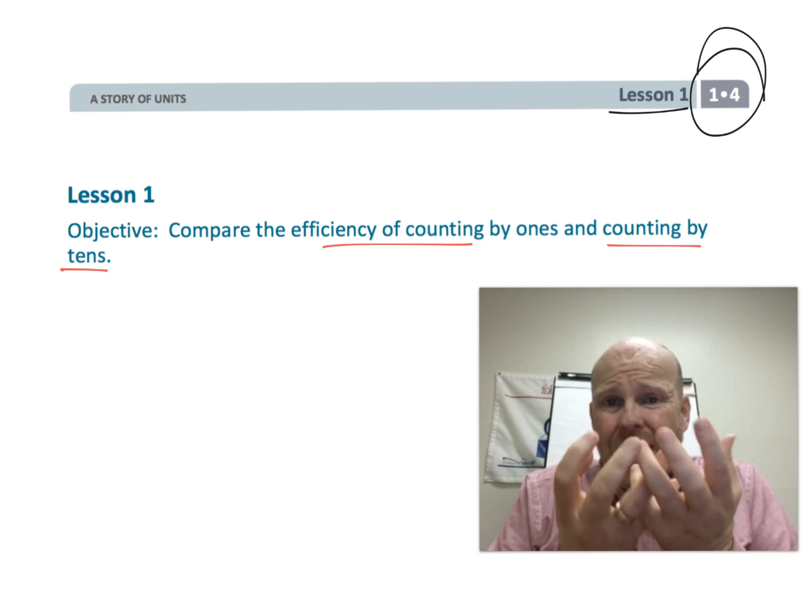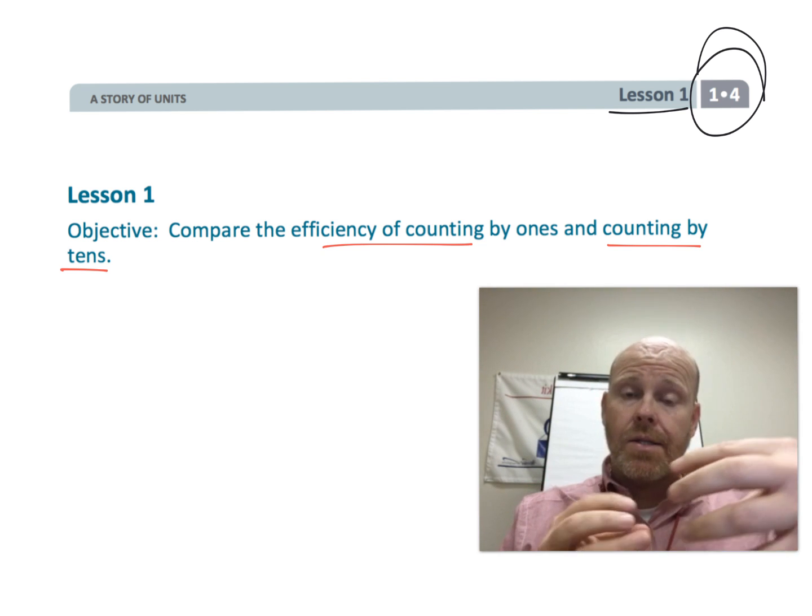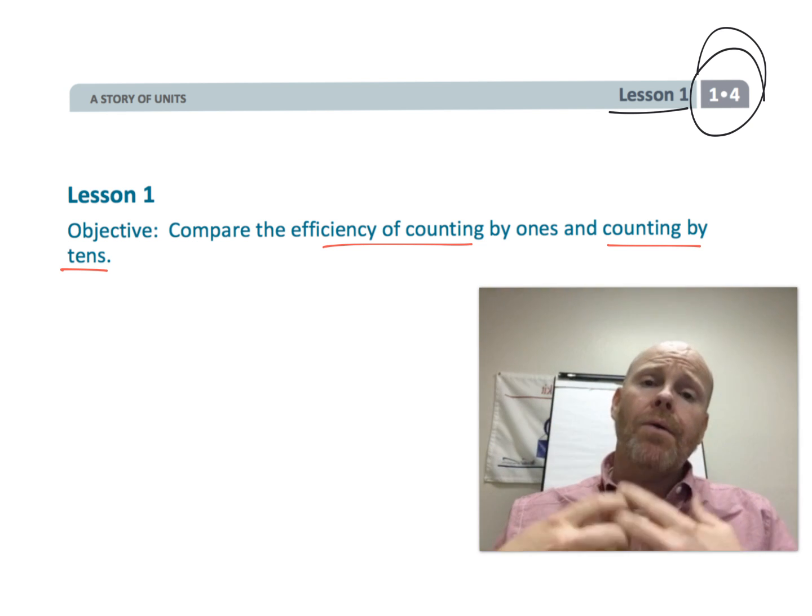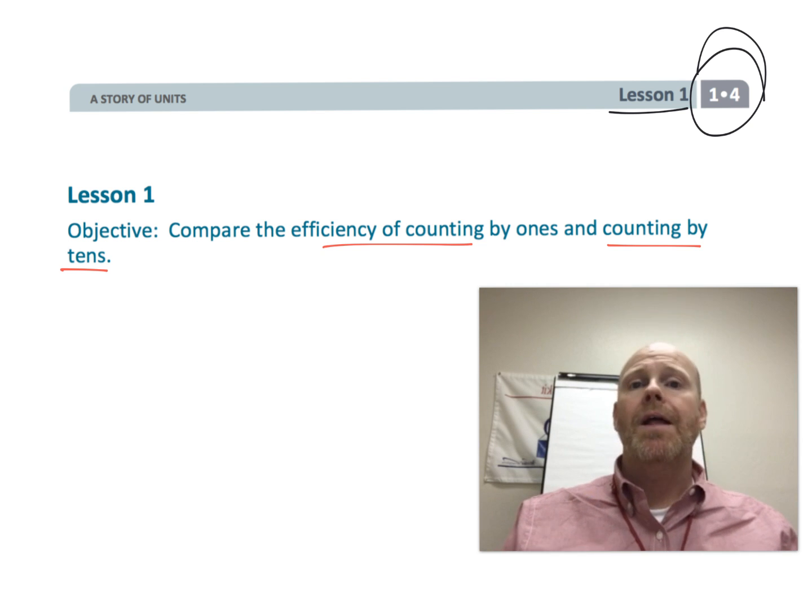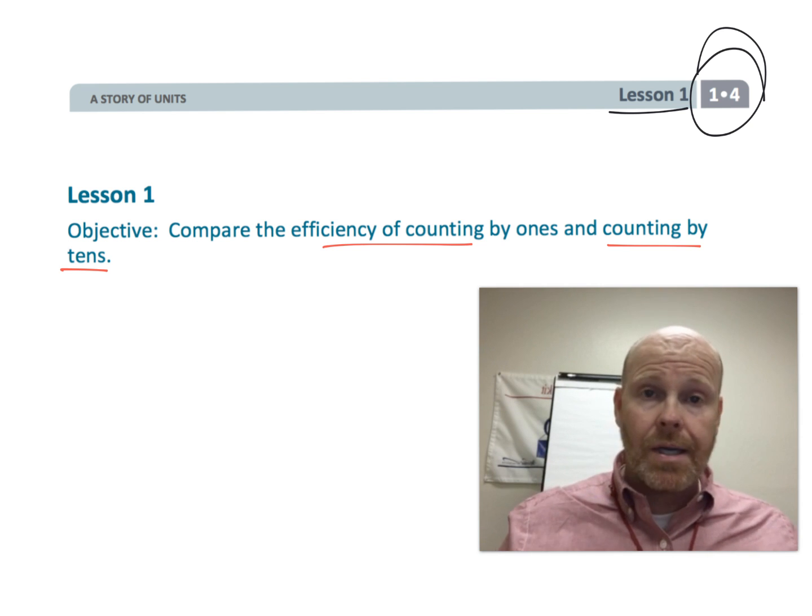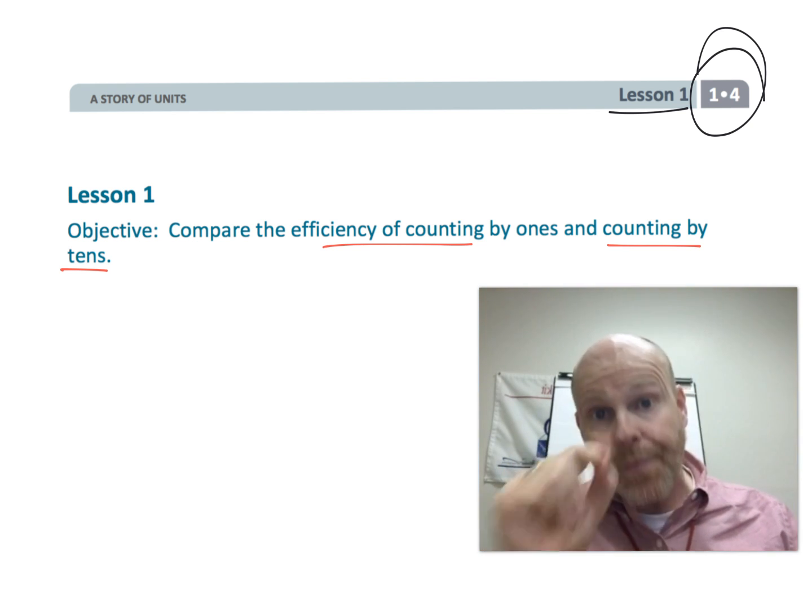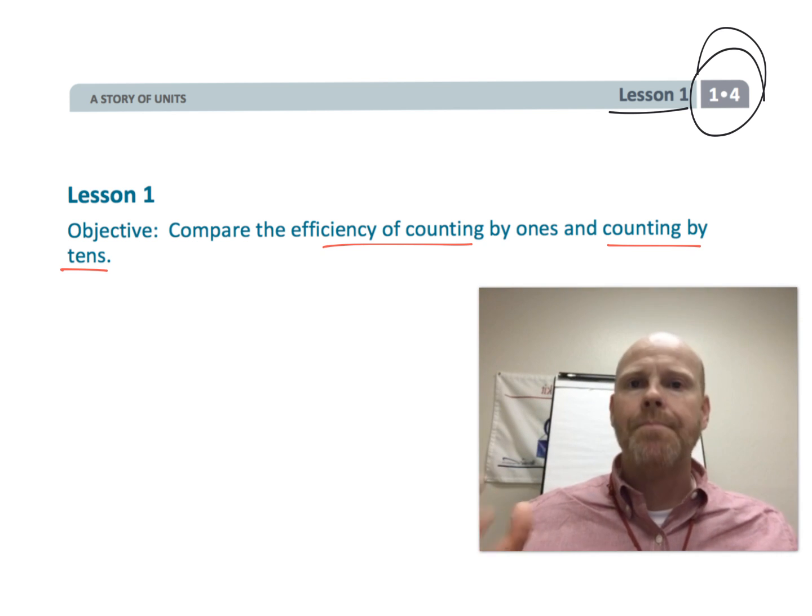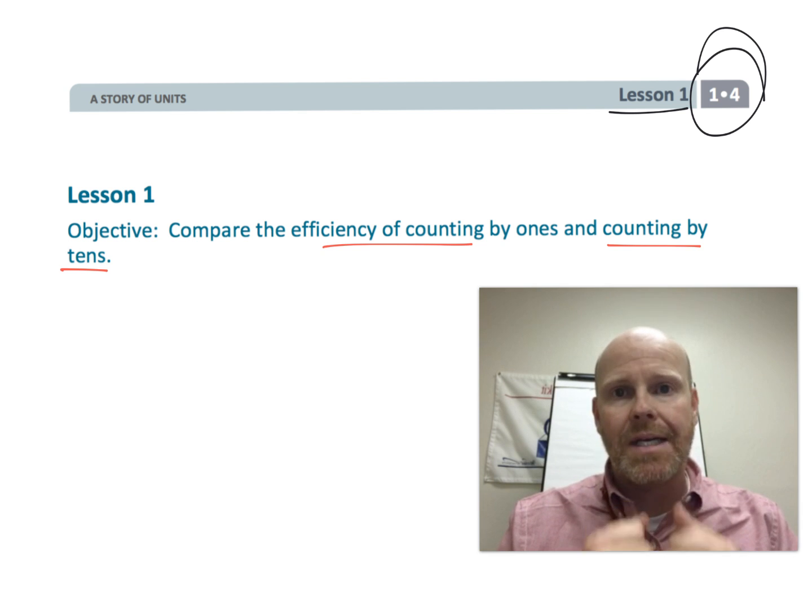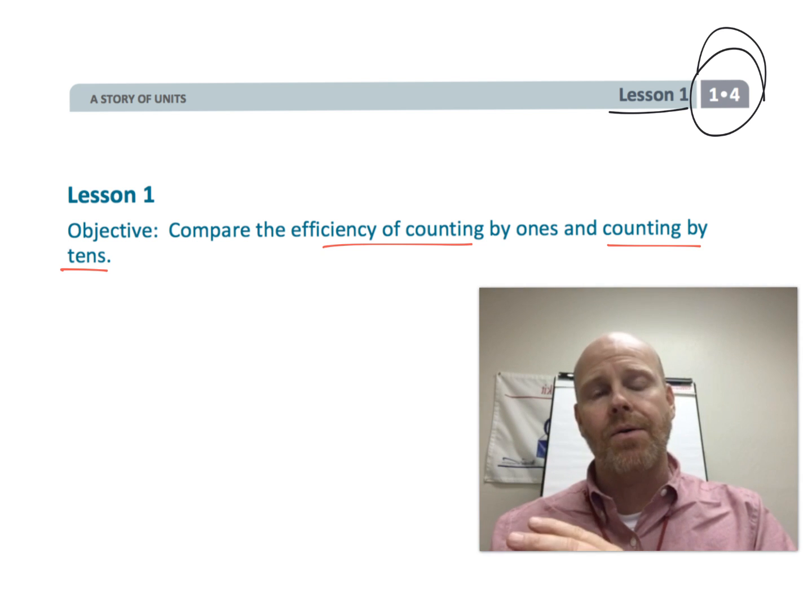The idea is we want students to recognize that when they're counting a big huge pile of things, counting by tens is much more efficient than counting by ones. 10, 20, 30, 40 is much quicker to count up to 40 than it is to go 1, 2, 3, 4, 5, 6, 7, 8, 9, 10, 11, 12, 13, 14 and keep counting forever. Ultimately this is leading our students into that wonderful invention called the place value system.